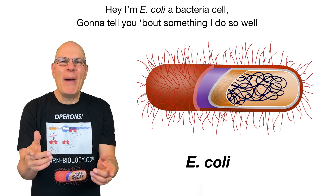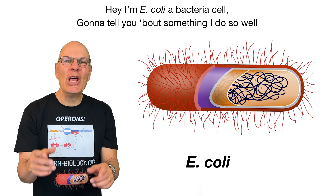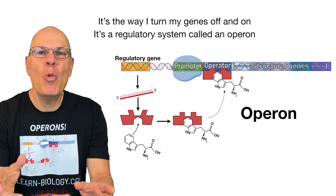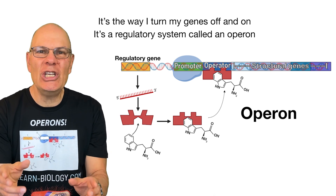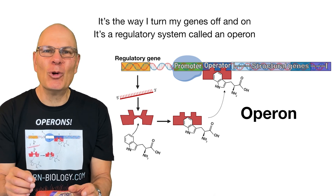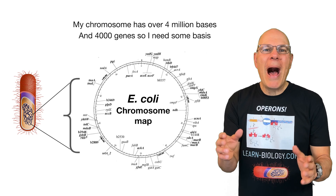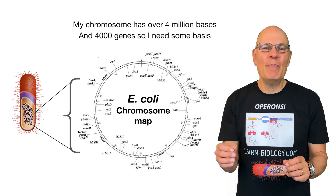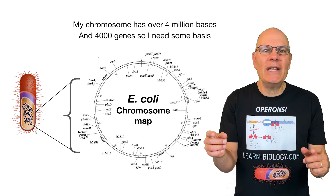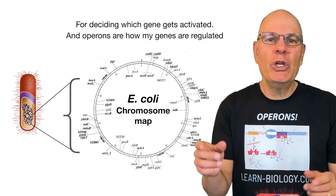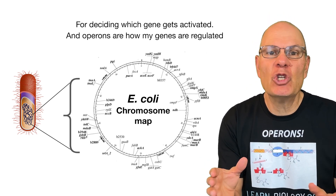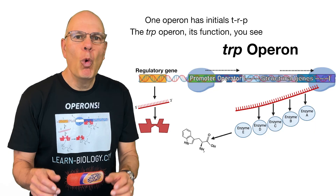Hey, I'm E. coli, a bacterial cell. Gonna tell you about something I do so well — it's the way I turn my genes off and on. It's a regulatory system called an operon. My chromosome has over 4 million bases and 4,000 genes, so I need some bases for deciding which gene gets activated. Operons are how my genes are regulated.